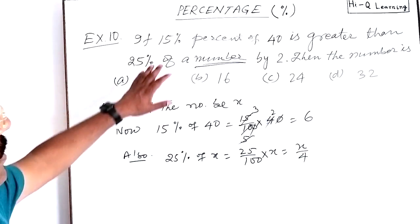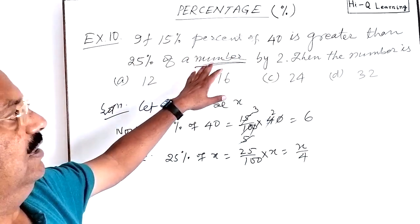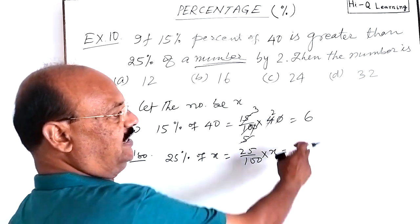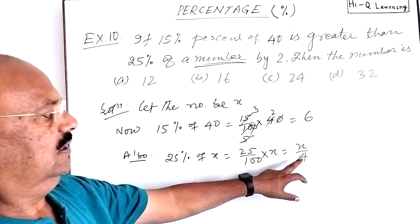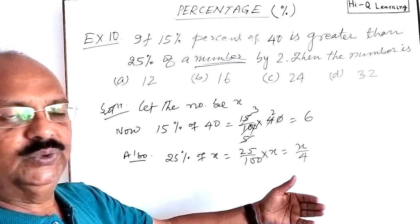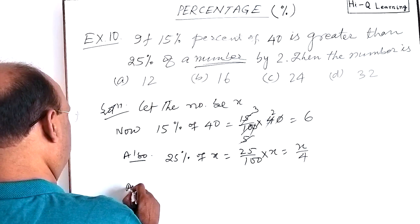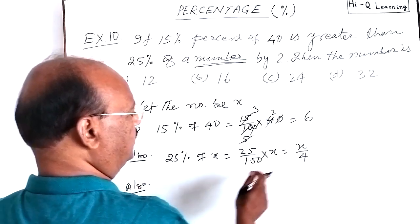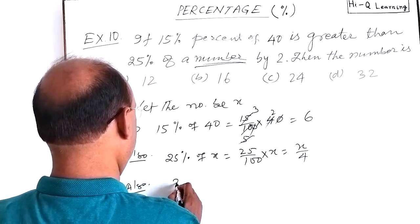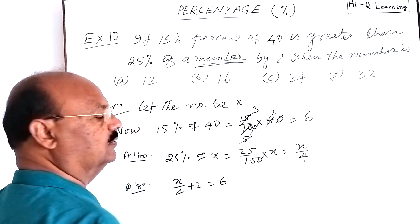And what is given? 15% of 40 is greater than 25% of the number by 2, means 6 is greater than X by 4 by 2. It means, if you add 2 to this number, this will be equal to 6.